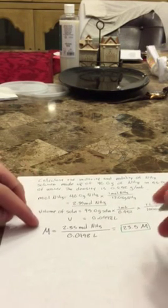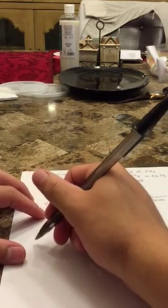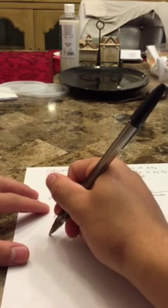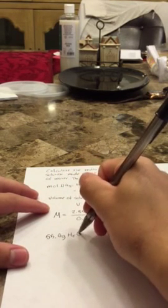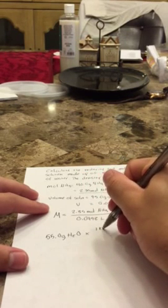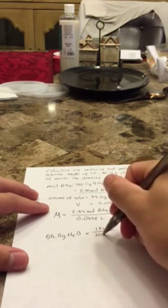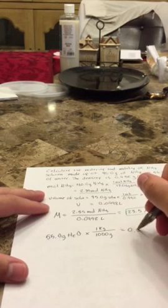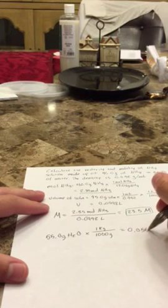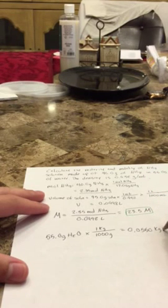And all that's left to do now is find the molality. And to do that, we have to convert our 55 grams into kilograms. So all we have to do is 55.0 grams of H2O times 1 kg over 1000, because again, that's our conversion factor. And that equals 0.0550 kg of H2O.